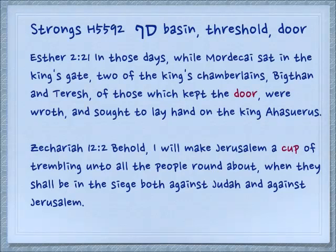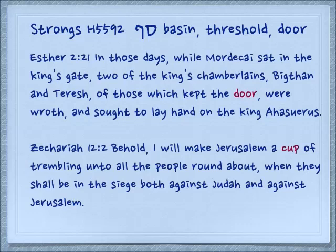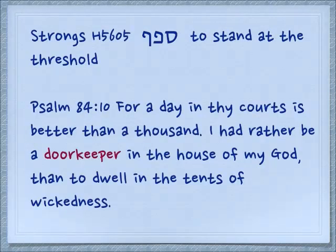Zechariah 12:2: 'Behold, I will make Jerusalem a cup of trembling unto all the people round about when they shall be in the siege both against Judah and against Jerusalem.' So a cup and a basin are similar to a threshold in that the lip or the rim of the cup is like a threshold. From this we have a geminate verb.